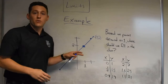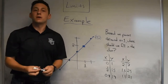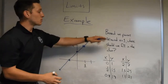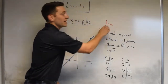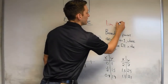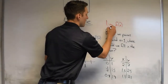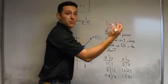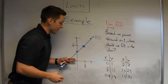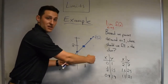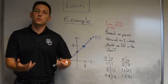This whole process of guessing where we should put the y value based on the points around it and estimating is going to be called the limit. The mathematical way we write this is: find the limit of f of x as x approaches the number we're after. So, as x approaches 1 from either side, take note of the y values and tell me the y value that you should land on if we were to fill in the dot.